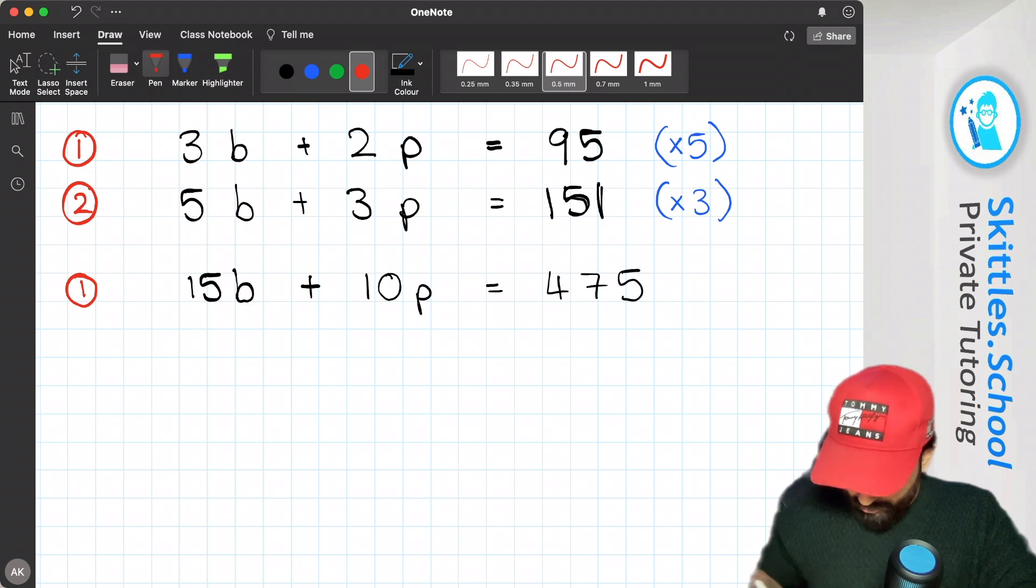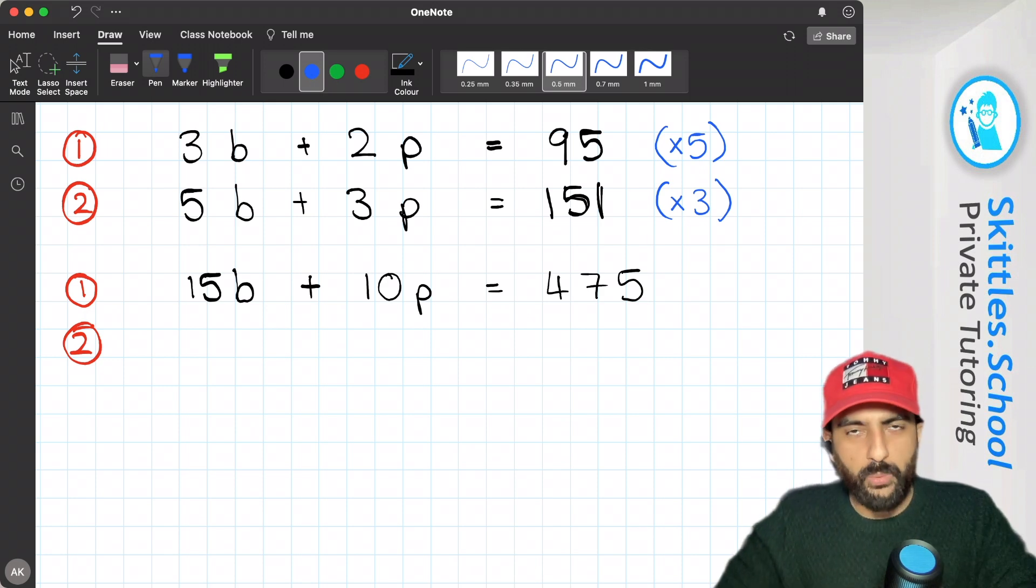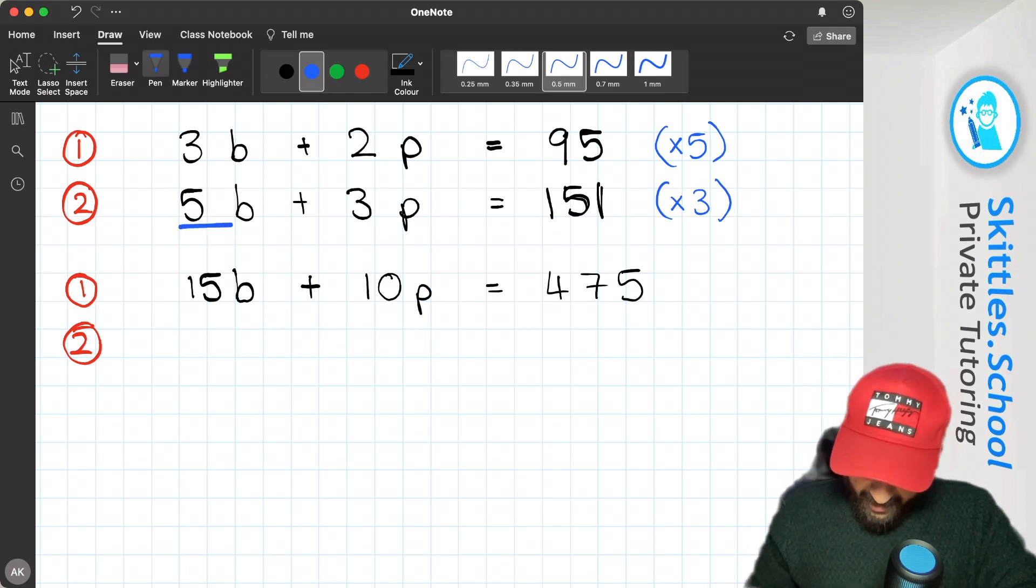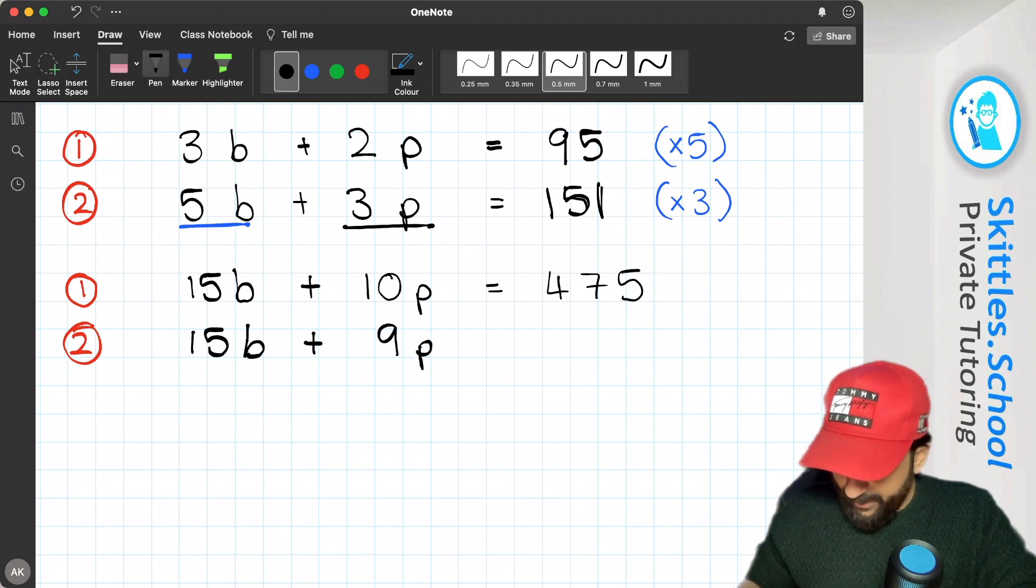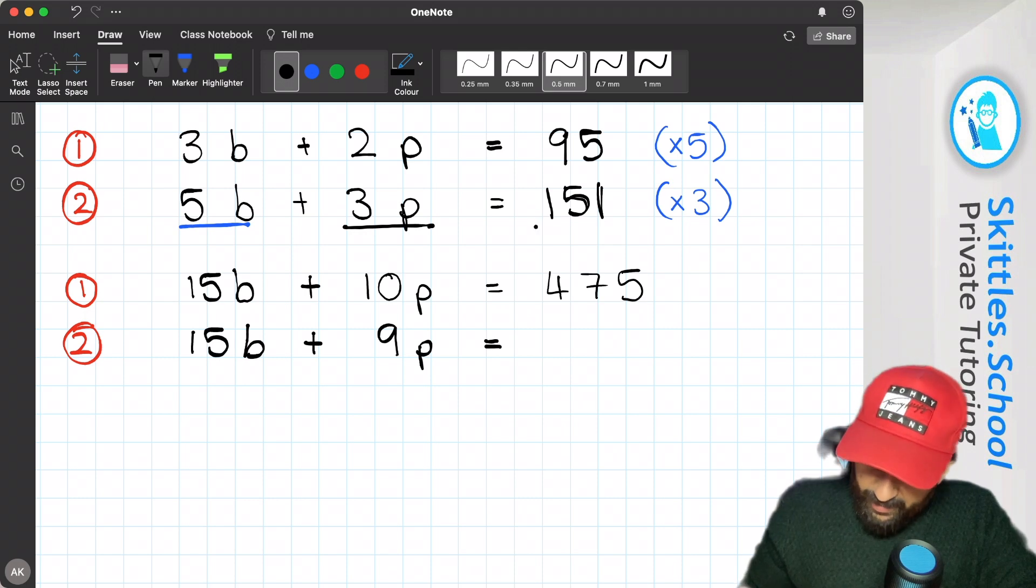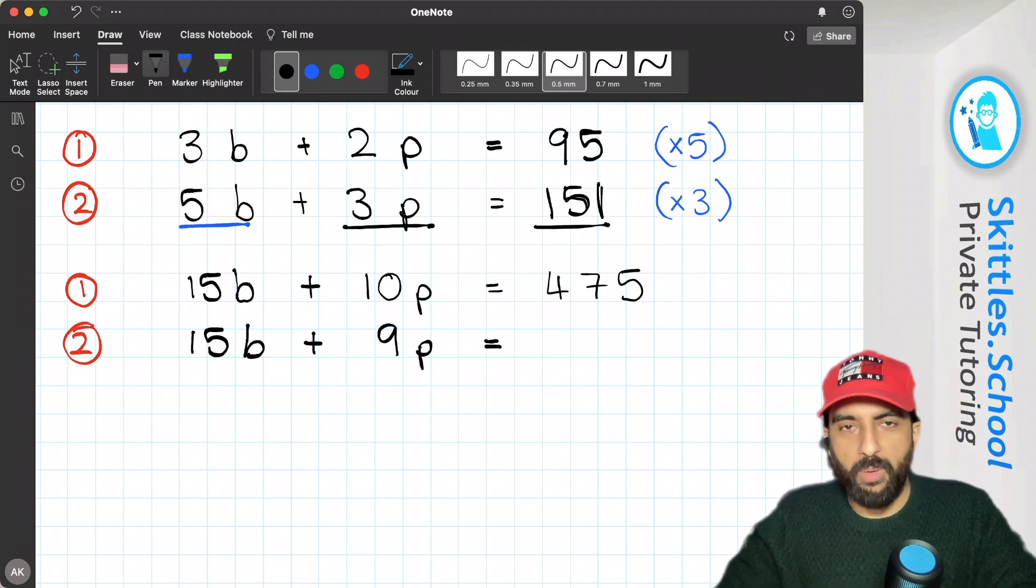Let's take a look at equation 2. We're going to do the same thing, but this time we're going to multiply it by 3. So 5b multiplied by 3 is 15b, and notice how I've got 15b in both equations. 3p multiplied by 3 is 9p, and 151 multiplied by 3 is 453.